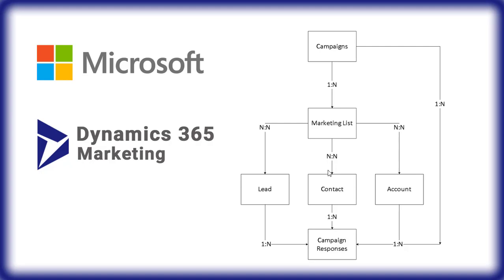First we look at Marketing List to Campaign, which is marked as a one-to-N relationship, meaning one campaign may have multiple marketing lists. Marketing List is marked to Leads, Contacts, and Accounts as an N-to-N relation, meaning one marketing list may have N number of contacts, and one contact may associate to many marketing lists.